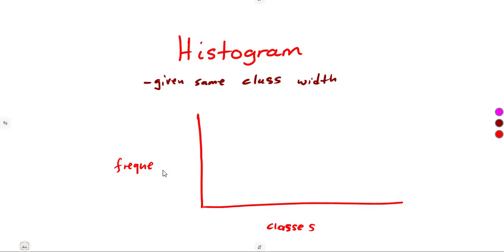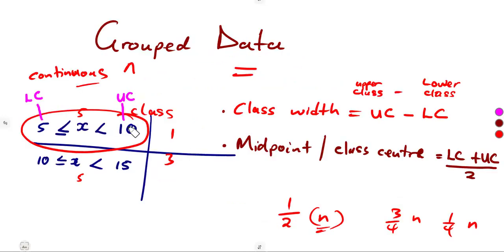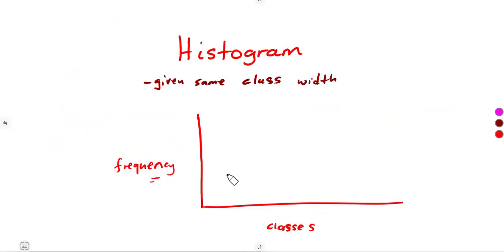You are going to represent classes as they are and the frequency as it is. Let us be very, very careful there. We've got the same class width. So meaning to say, you are joining from a certain class from maybe 5 up to 10 versus 1. So if we take 5 to 10 versus 1, meaning to say we are going to have a bar.